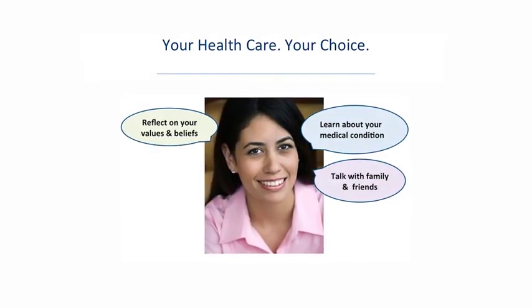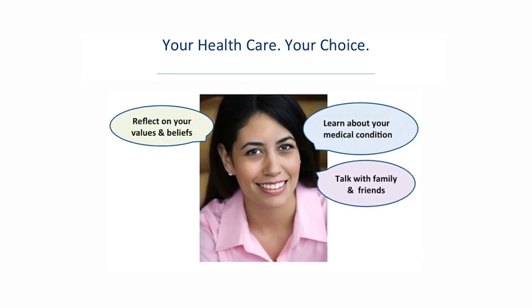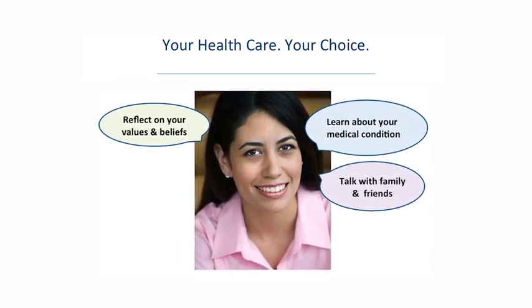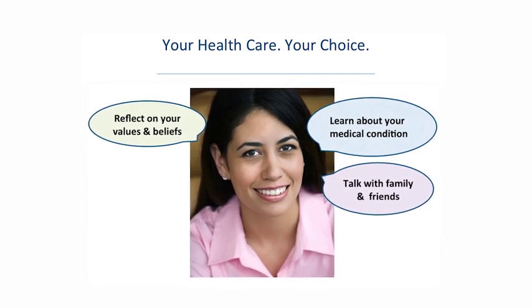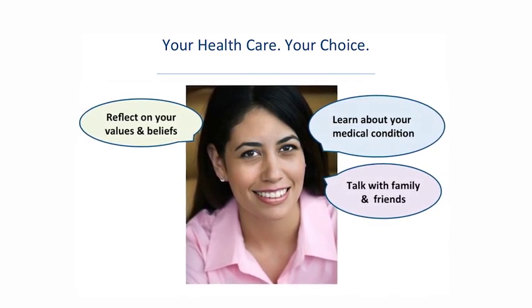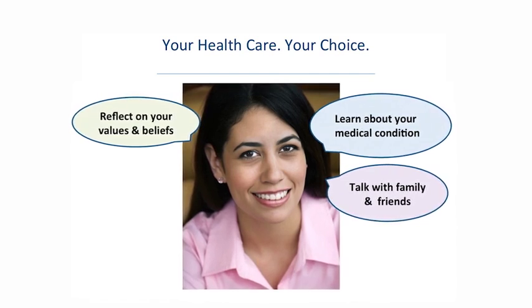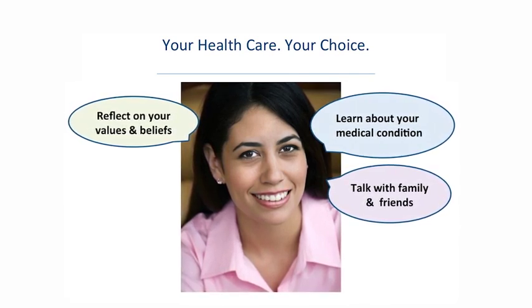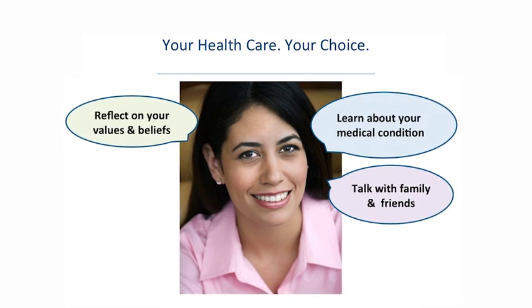It's your healthcare and your choice. You have a powerful civil right to make your own healthcare choices and to direct your care. Before we start to make a plan, take a minute to think about what's right for you. Reflect on your values, your beliefs, your cultural traditions — what shapes your care decisions? You may want to talk to your doctors to find out more about your medical condition. You also have a powerful right to information in Massachusetts. You may also want to talk to your family and friends about what's important to you and the kind of care you want. It's your healthcare and your choice.